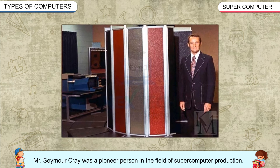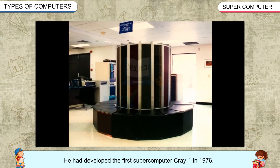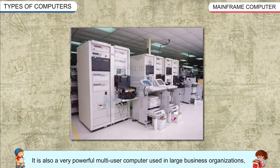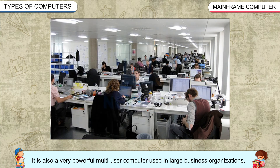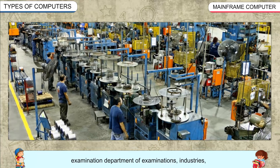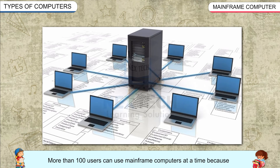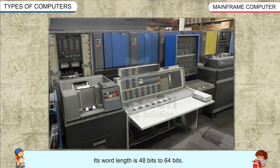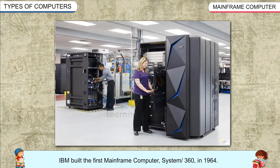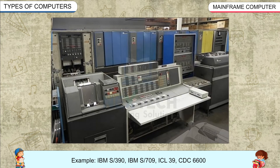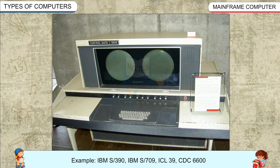Seymour Cray was a pioneer in the field of supercomputer production. He developed the first supercomputer, Cray 1, in 1976. Mainframe Computer: It is a very powerful multi-user computer used in large business organizations, examination departments, industry, and defense to process data of complex nature. It can respond to several hundred requests very quickly, uses several CPUs for data processing, and more than 100 users can use it at a time because it works on time-sharing mode. Its word length is 48 to 64 bits. IBM built the first mainframe computer, System 360, in 1964. Examples include IBM S390, IBM S709, ICL39, and CDC 6600.